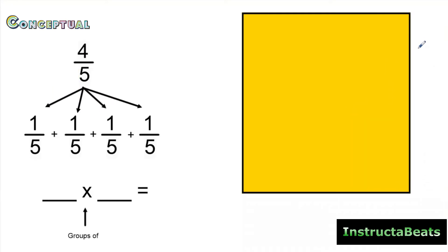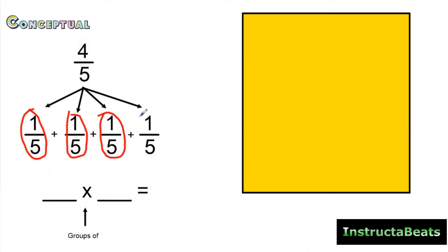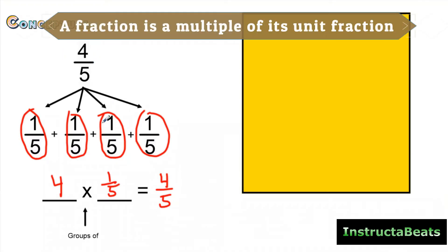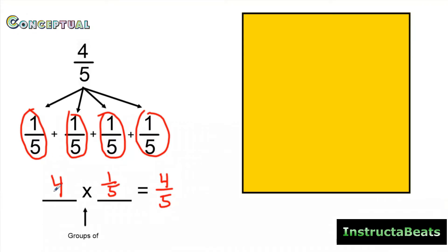Let's go back to four-fifths and look at this conceptually. I've already decomposed it into its unit fraction, one-fifth, and I had one-fifth plus one-fifth plus one-fifth plus one-fifth. Now let's combine that with multiplication as repeated addition. How many groups of one-fifth do I have? I see four groups. So written as a multiplication equation, that's four groups of one-fifth, and four groups of one-fifth equals four-fifths. Four-fifths is a multiple of its unit fraction, meaning I can multiply the unit fraction by four to get four-fifths.